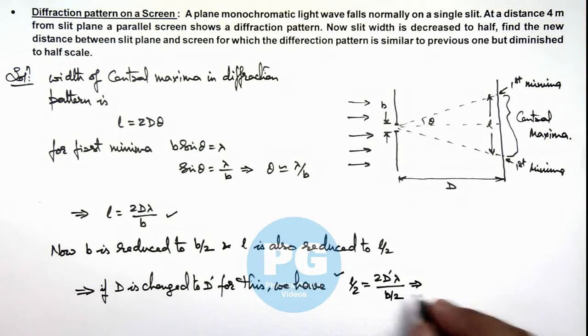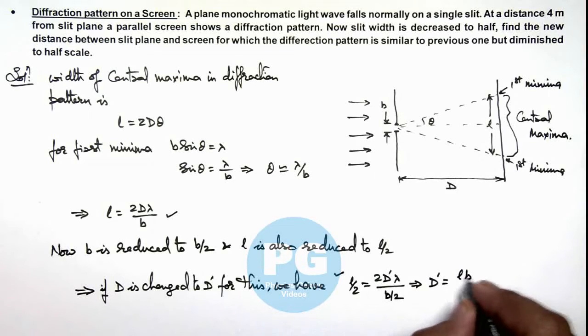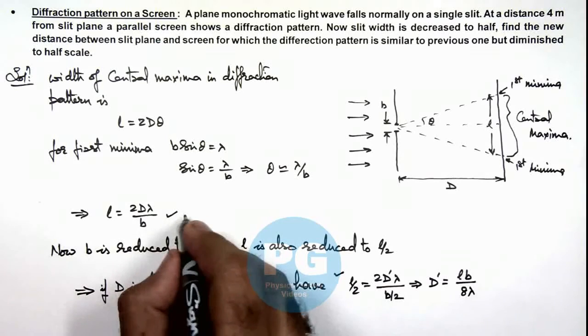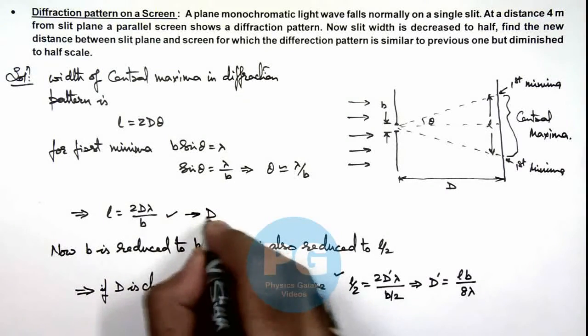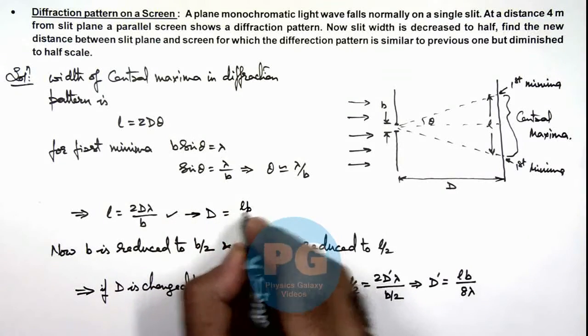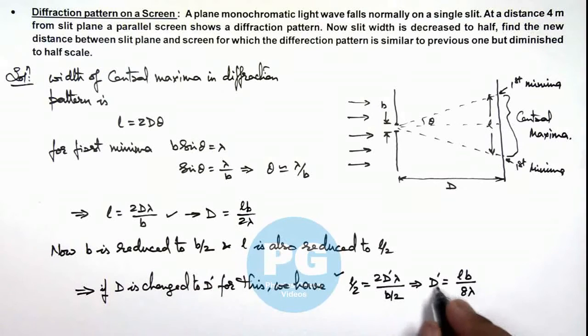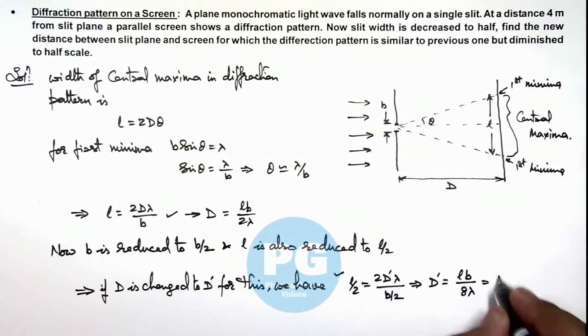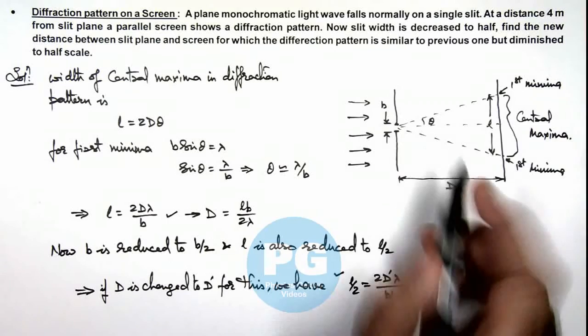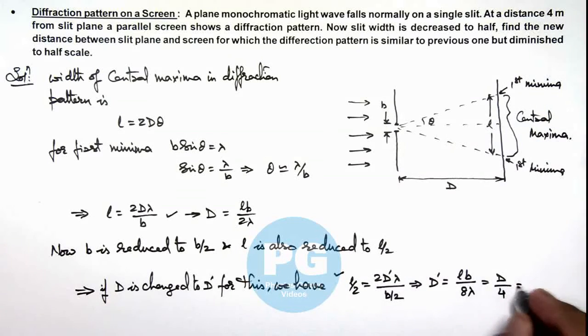This implies here the value of d dash we are getting is l b upon 8 lambda. So in this situation, if we just have a look, the value of d we are getting here is l b by 2 lambda. So the value of d dash here is equal to d by 4. Initial d was 4 meters, so this is equal to 1 meter. That is the result of this problem.